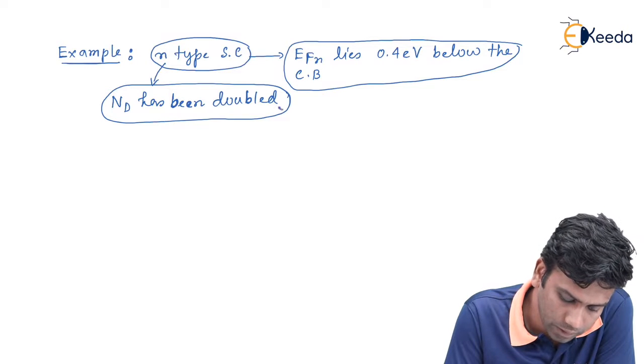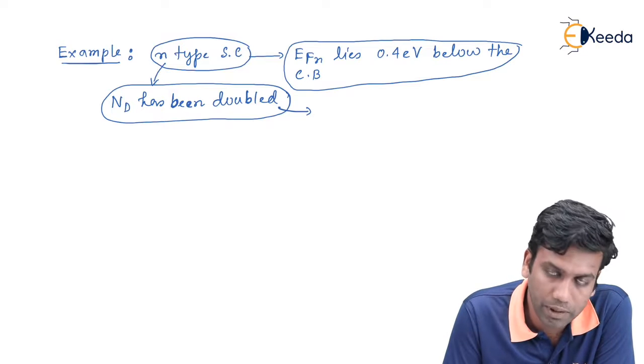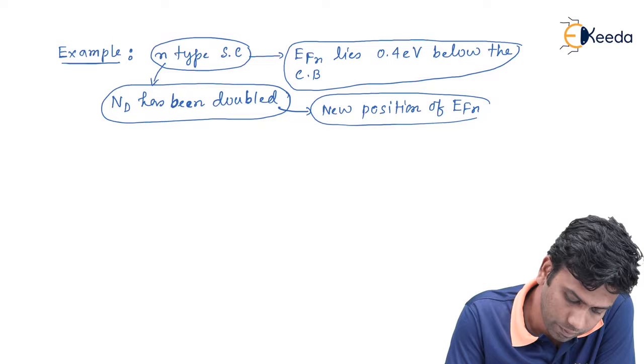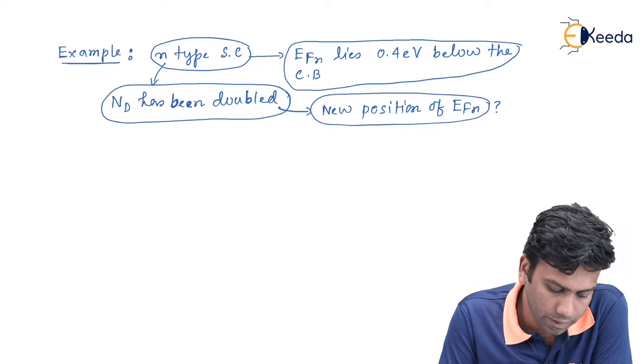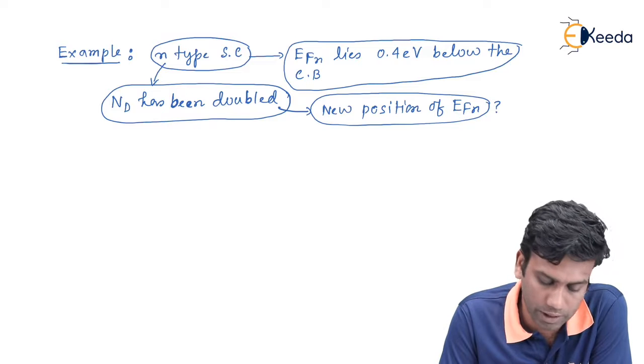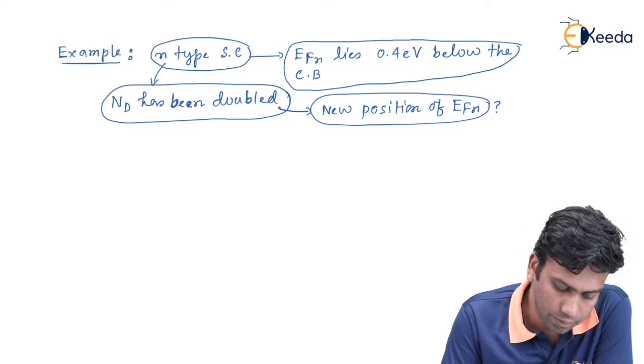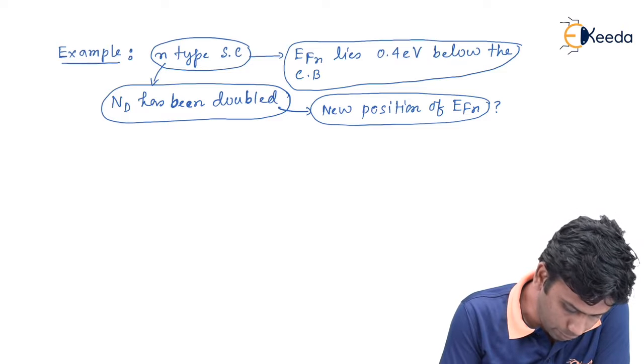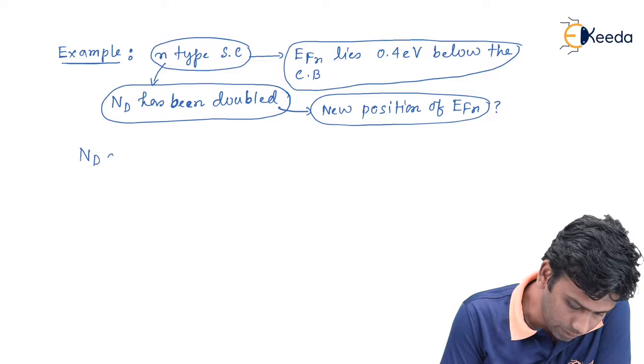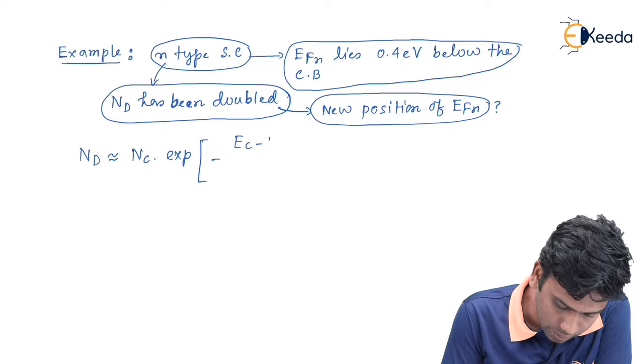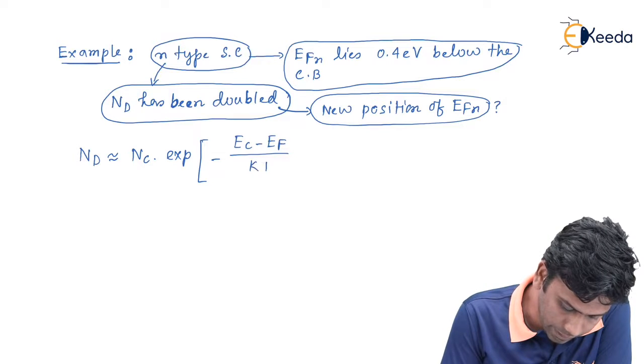Then what will be the position of the new Fermi level? That means here in this example the Fermi level position is controlled by the doping concentration. So let us look what will be the new position. In this n-type semiconductor, the doping concentration will be equals to Nc exponential minus Ec minus EF divided by KT.